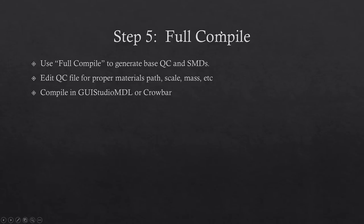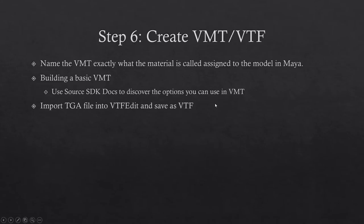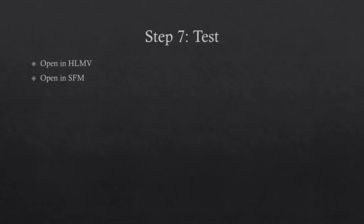Step five, we'll do a full compile as shown in Mesa, which will generate the QC file and SMDs. We'll edit the QC file and then compile using GUI Studio MDL, or you can use Crowbar. Step six, we're going to create the VMT and VTF files and explain what these are. Step seven, we'll finally test — we'll open the Half-Life Model Viewer and then open SFM. So let's go back to step one.